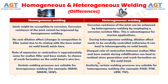Difference number 9: Certain welding processes are suitable for homogeneous welding — for example, shielded metal arc welding, gas metal arc welding, and submerged arc welding. Similarly, certain welding processes are suitable for heterogeneous welding — for example, plasma arc welding, friction stir welding, laser beam welding, and thermite welding.